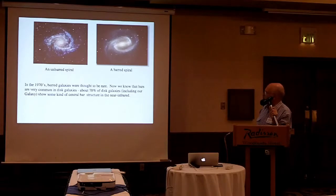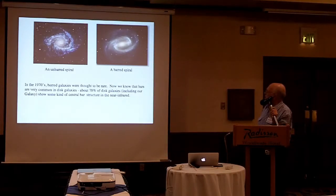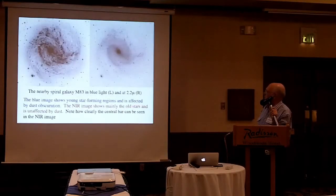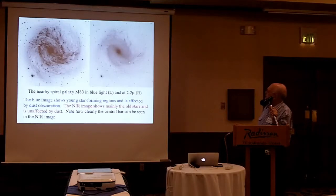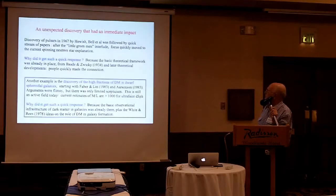Here are pictures of barred and unbarred spirals. An unbarred spiral is basically a symmetric system; a barred spiral has a central elongated bar. In the 1970s, barred spirals were thought to be rare. Now we know they are very common — most galaxies, including our own, have a central bar when viewed in the infrared. Here is the spiral galaxy M83, first in blue light, then in the K-band infrared. In the infrared, blue stars are not so dominant and dust absorption becomes transparent — you can see very clearly a bar in this galaxy that you don't immediately see in the optical picture.